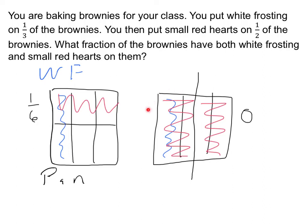If we have yet another case, that piece has both white frosting and red hearts, and the answer would be one-third. So there are lots of different answers depending on which half of the brownies we put small red hearts on. The final answer is that there's not enough information to solve this problem.